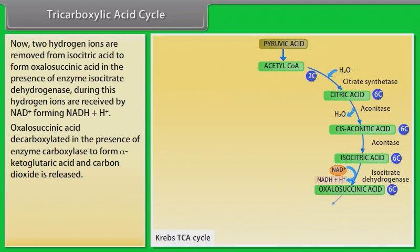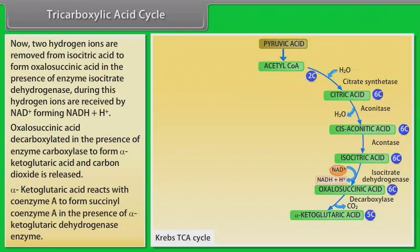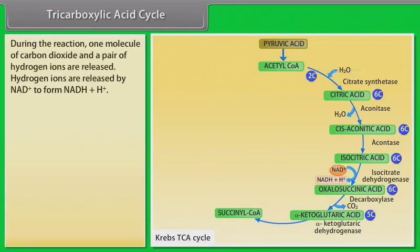Oxalosuccinic acid is decarboxylated in the presence of enzyme decarboxylase to form alpha-ketoglutaric acid, and carbon dioxide is released. Alpha-ketoglutaric acid reacts with coenzyme A to form succinyl coenzyme A in the presence of alpha-ketoglutarate dehydrogenase. During the reaction, one molecule of carbon dioxide and a pair of hydrogen ions are released.